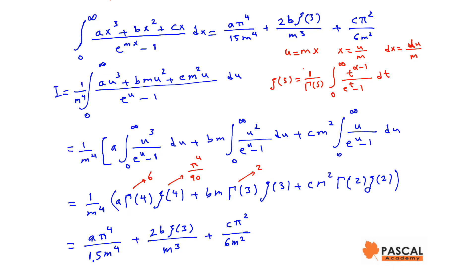Gamma of 3 is 2 factorial, which is 2. Gamma of 2 is 1 factorial, which is 1. Zeta of 2 is π²/6.